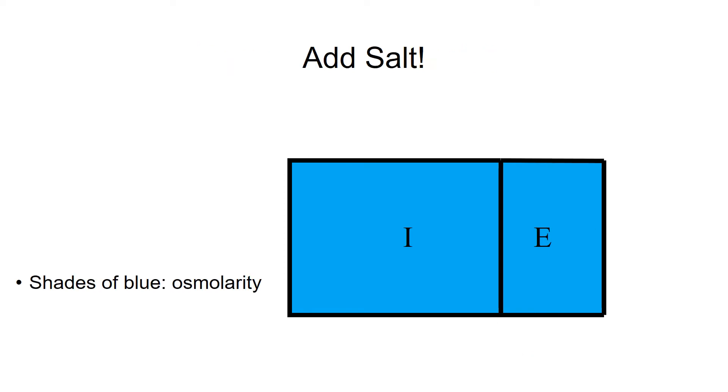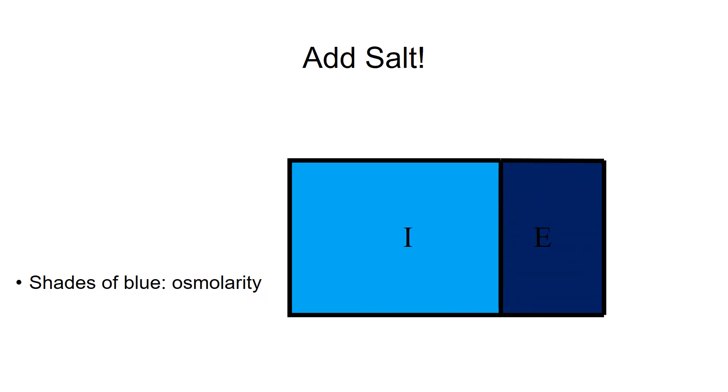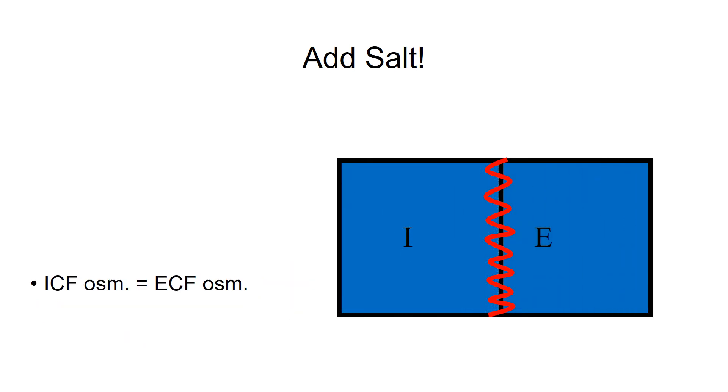The third example is adding salt to the extracellular fluid, which is represented by this darker shade of blue on the right hand side. Remembering that the cell membrane is permeable to water driven by osmotic pressure, we can predict the fluid movement from the intracellular compartment to the extracellular compartment from osmotic pressure. This is nothing more than cells shrinking in hyperosmotic solutions.